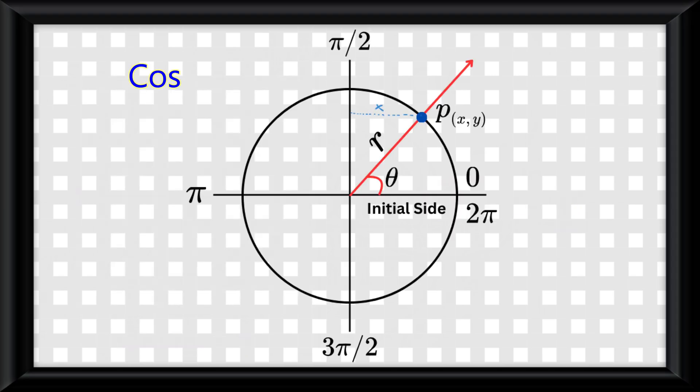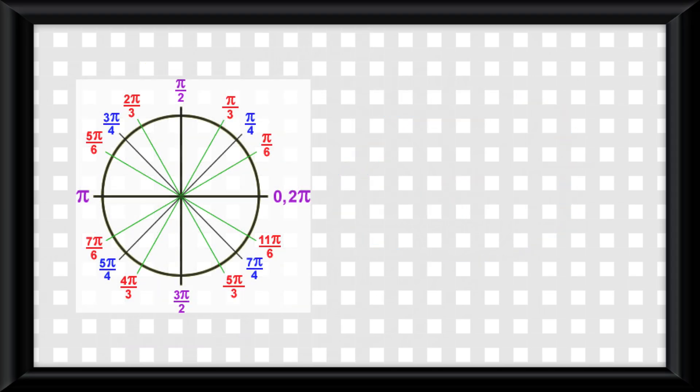Cosine deals with a horizontal displacement, which is x divided by the radius r. Again, in the unit circle, since the radius is 1, it would make cosine the x coordinate.